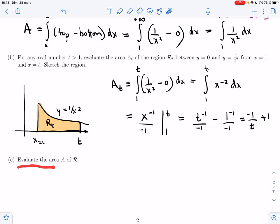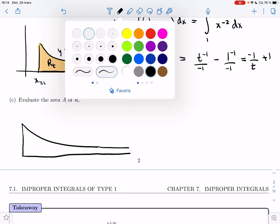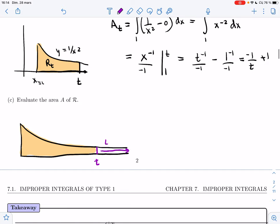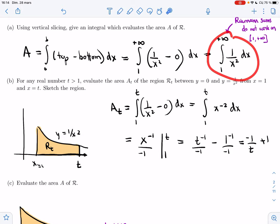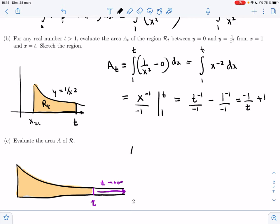I want to use that to evaluate the area of R. So I have my region R that goes forever, and I have my region R_t that stops at t. So what I want to do is I want to keep increasing, so I want to send t to infinity. I cannot replace t by infinity because now we're going in circles. I would get back to this point and nothing would really make sense yet. And so what I'll do is I'll say that the area is going to be the limit as t goes to infinity of A of t.